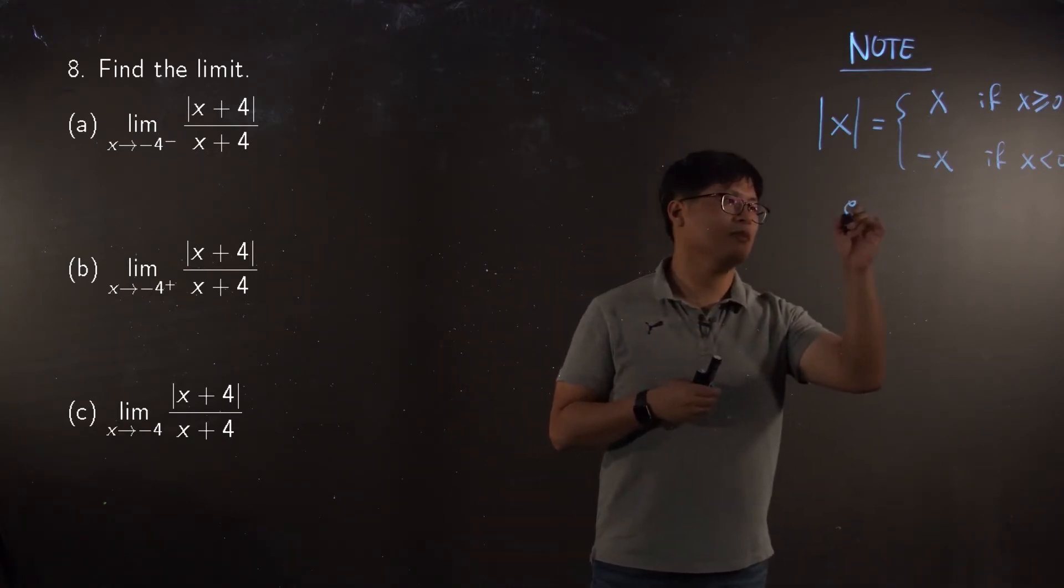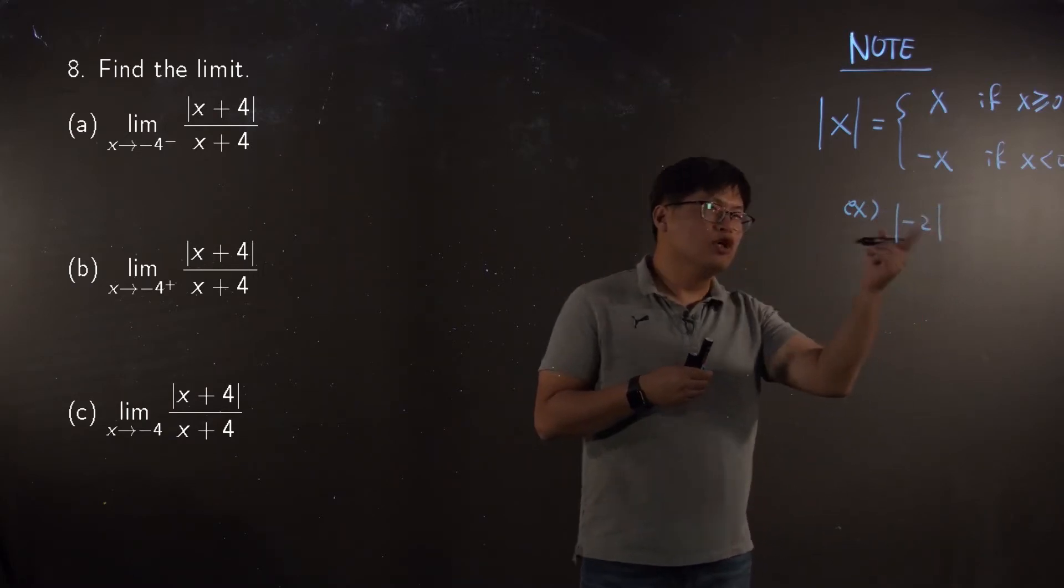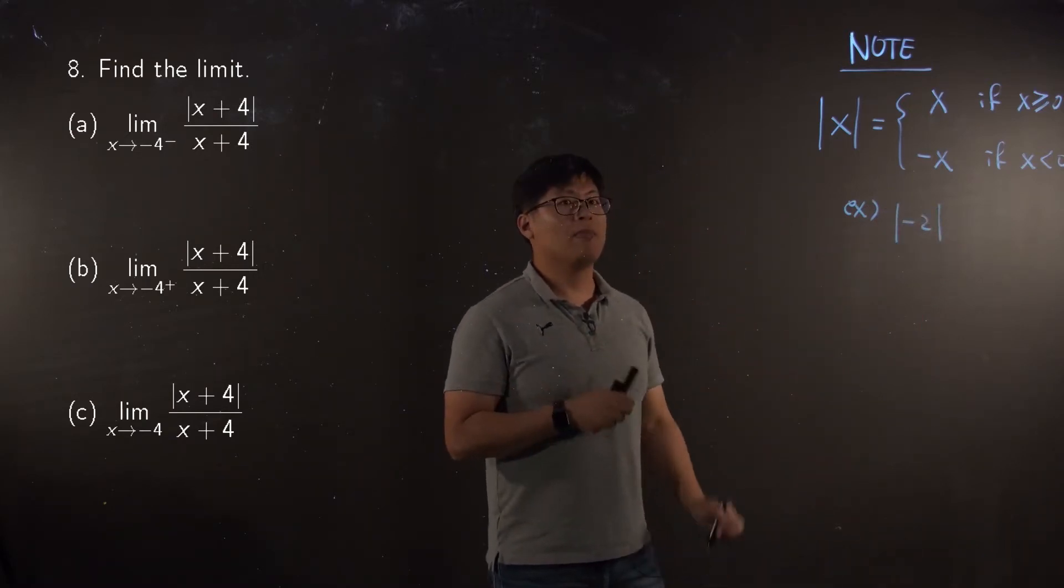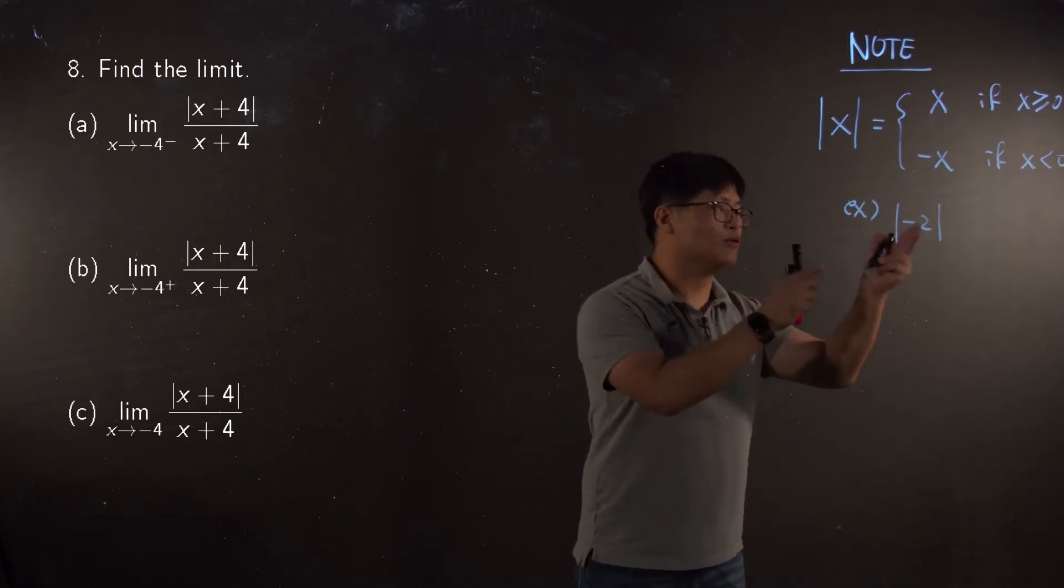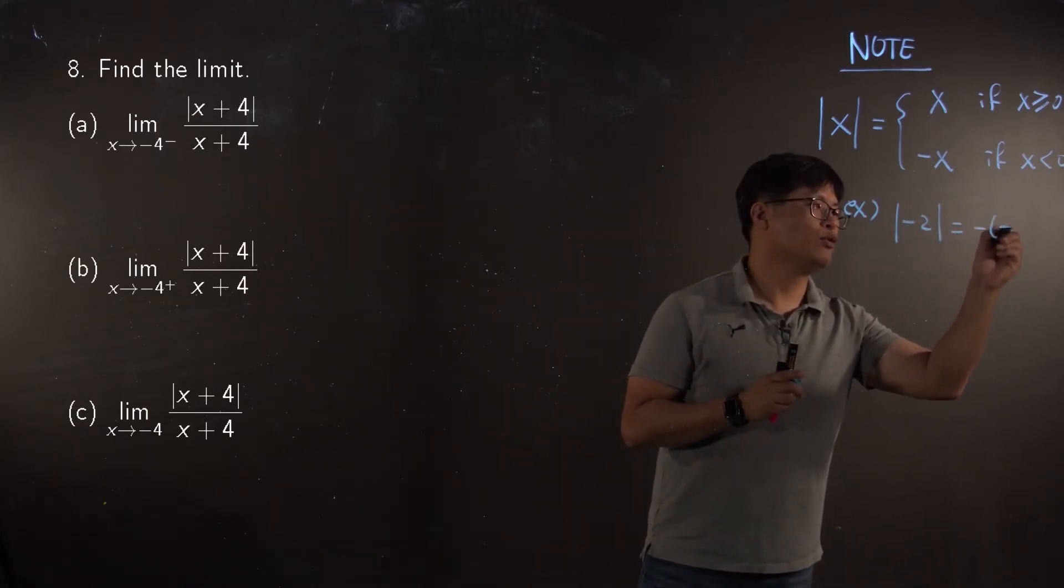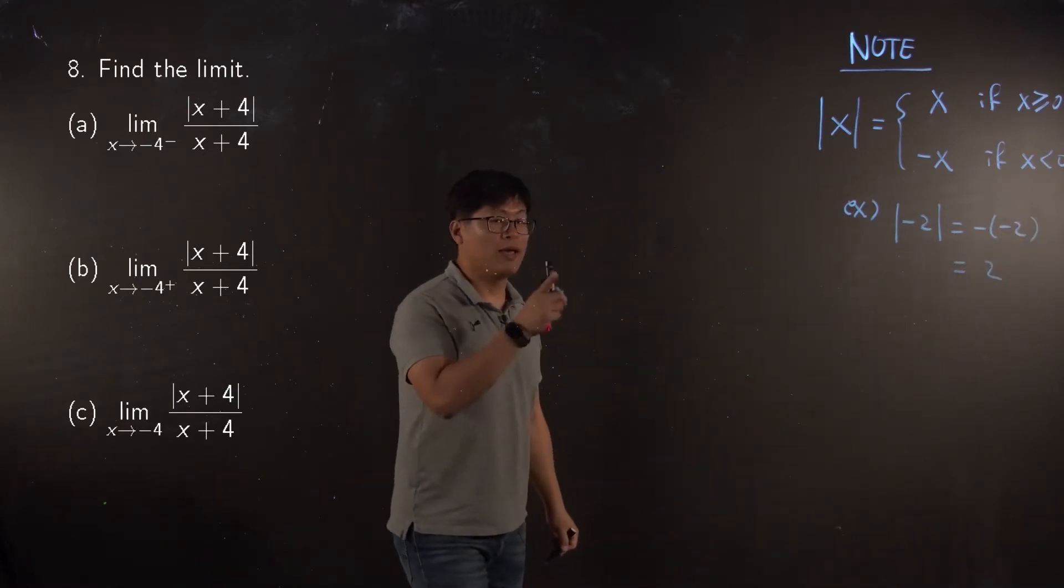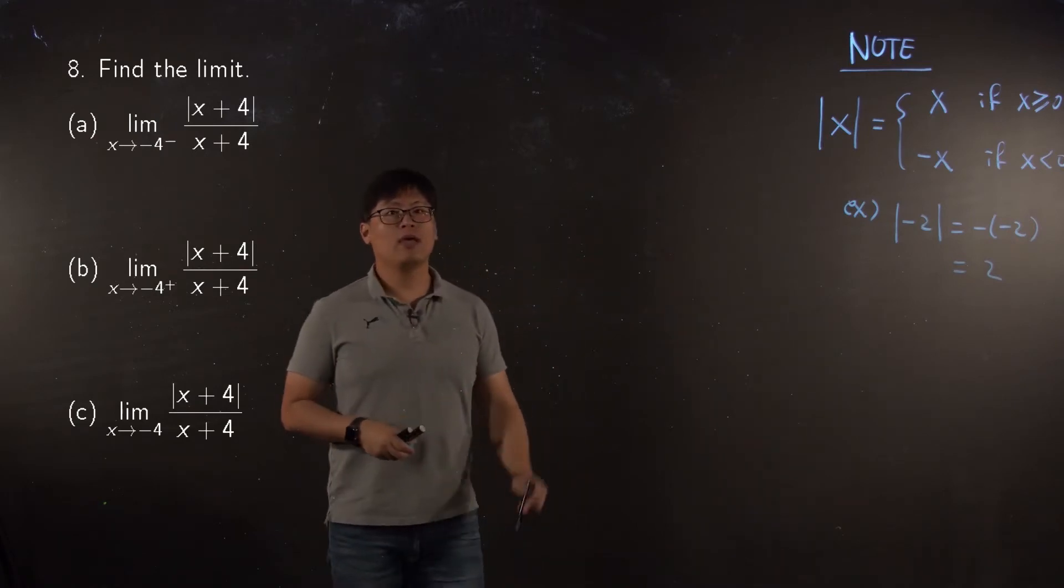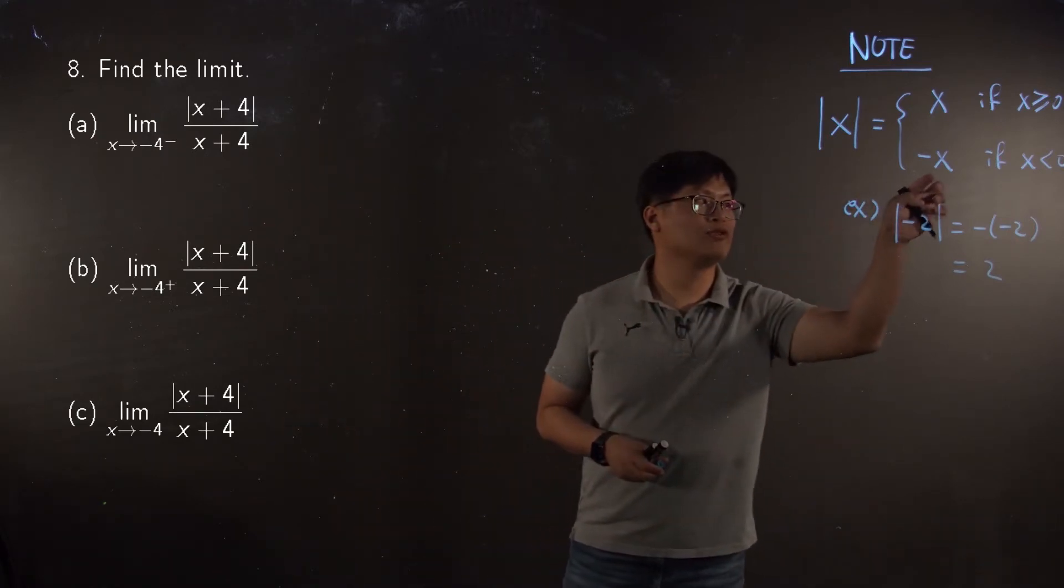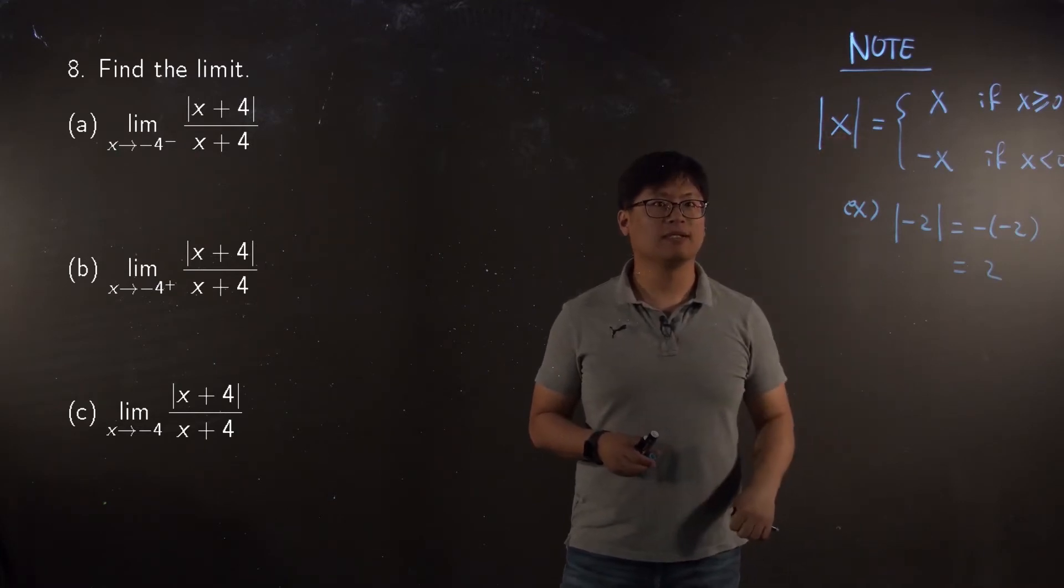So for example, think about absolute value of negative two. You know the answer, right? It is two. But mathematically, we are not going to answer by two directly. Mathematically, we will do like this way, which is two. So this is the way to make your negative value into positive. Don't forget this one. We have to use this one as long as your inside of absolute value is negative.